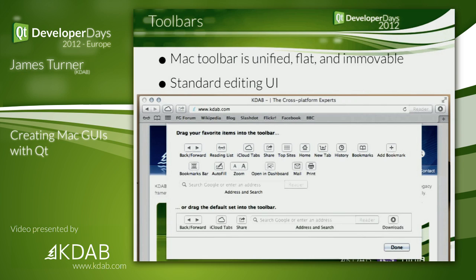The next biggest problem with toolbars is the Mac has a standard editing UI where you get a palette of things and can drag and drop them into the toolbar dynamically. Qt doesn't have this UI — you could fake it, and we should probably investigate providing a Mac toolbar editing dialog, but we don't have that at the moment. Also, the Mac toolbar isn't draggable, has no handle, can only go at the top, and has standard options for showing text under icons or just icons. Mac users expect your program to follow the global setting for that. There's only one toolbar on the Mac — no Mac program would ever have more than one.